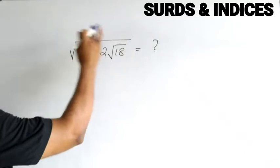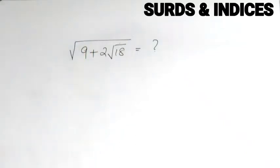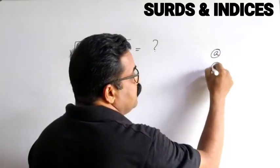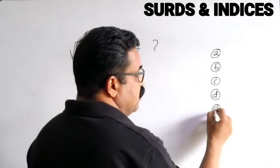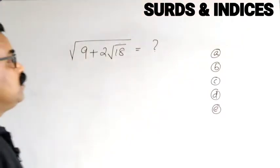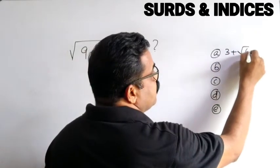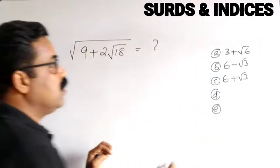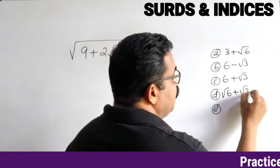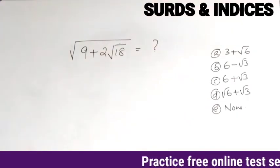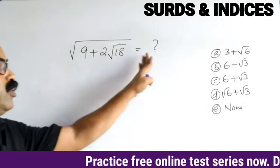The expression is 9 + 2√18, and we have five options: (a) 3 + √6, (b) 6 − √3, (c) 6 + √3, (d) √6 + √3, and (e) none of these. We need to find what √(9 + 2√18) equals.